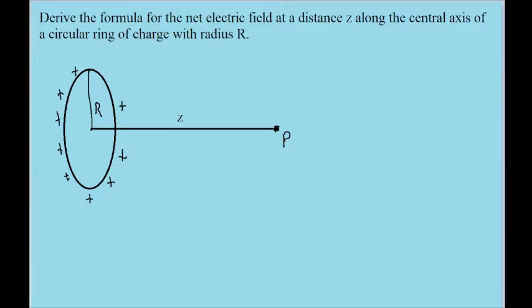In this video, I would like to talk about and derive the formula for the net electric field at some point due to a circular ring of charge. We have a circle with radius R, and there is some axis going through the middle of the circle at a right angle. Along this axis, at some distance z, there is a point labeled point P, and we want to know what the electric field is at that point due to the ring.